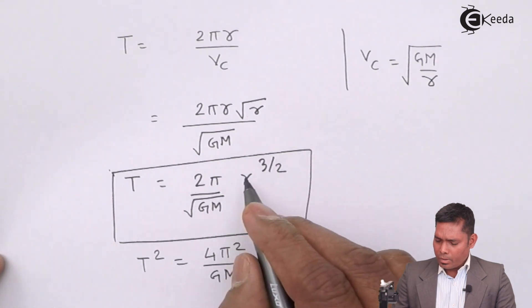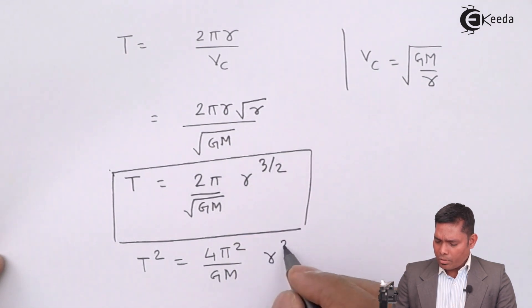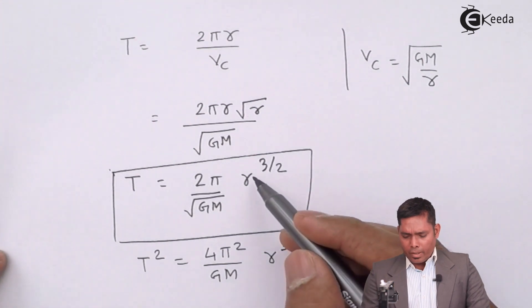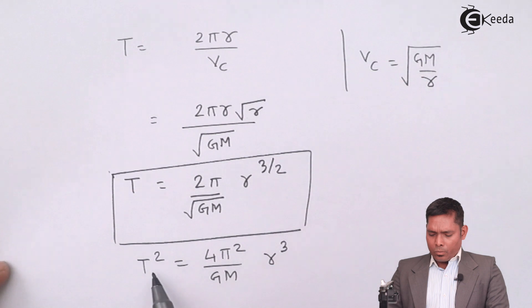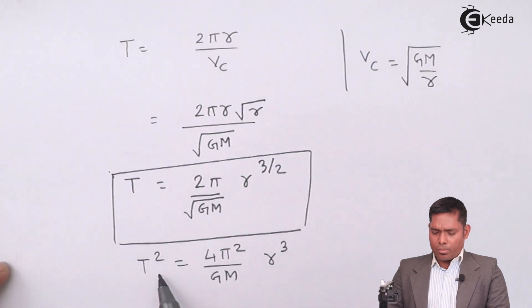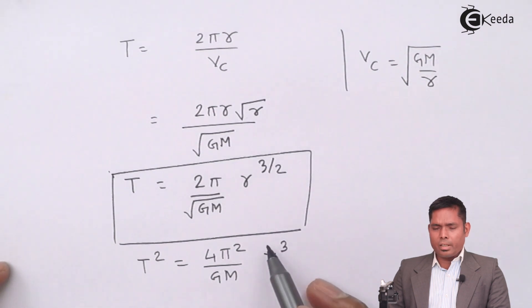Now if I take the square, this will be r to the power 3. So this expression by squaring, I will get this one. You can see clearly that the square of the time period of the satellite is proportional to cube of the radius.